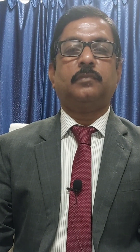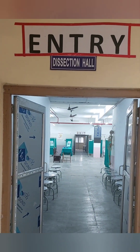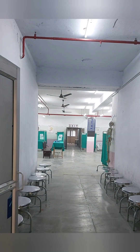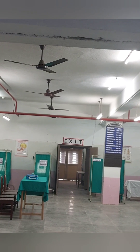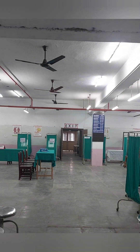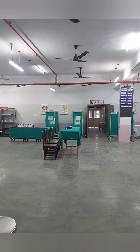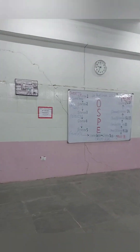We are going to the dissection hall where we have arranged the OSPE stations and the OSPE examination. This is our dissection hall where we arranged the OSPE examination, and this is the entry gate. Students will enter through this gate, and just opposite the entry gate you can see the exit gate, through which after completion of the examination and submission of their answer scripts they will go out. Here we will give a small orientation to the students before we start the examination.